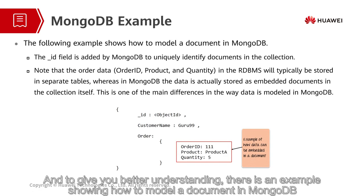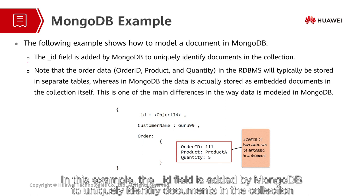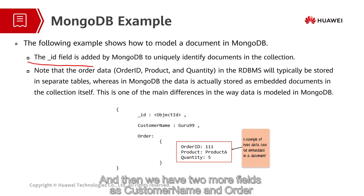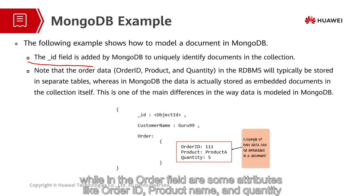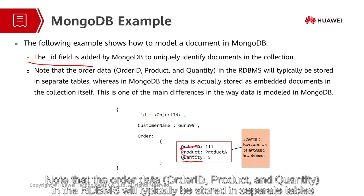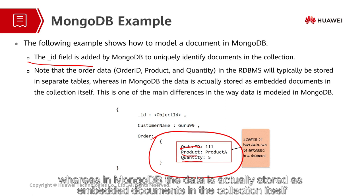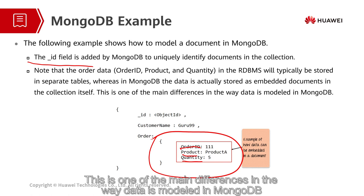To give you a better understanding, here is an example showing how to model a document in MongoDB. The underscore ID field is added by MongoDB to uniquely identify documents in the collection. Then we have two more fields: customer name and order. Within the order field are some attributes like order ID, product name, and quantity. Note that the order data would typically be stored in separate tables in a relational database, whereas in MongoDB, the data is actually stored as embedded documents in the collection itself. This is one of the main differences in the way data is modeled in MongoDB.